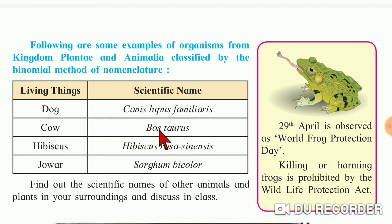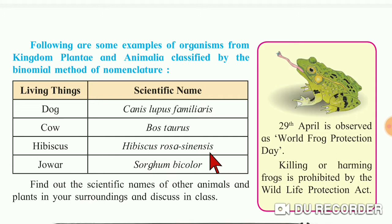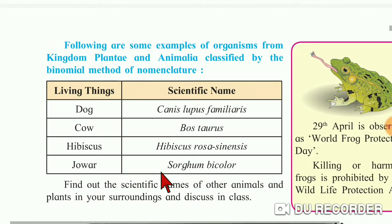The scientific name of cow is Bos taurus. The third one is Hibiscus, whose scientific name is Hibiscus rosa-sinensis. The last is Jowar, and its scientific name is Sorghum bicolor.